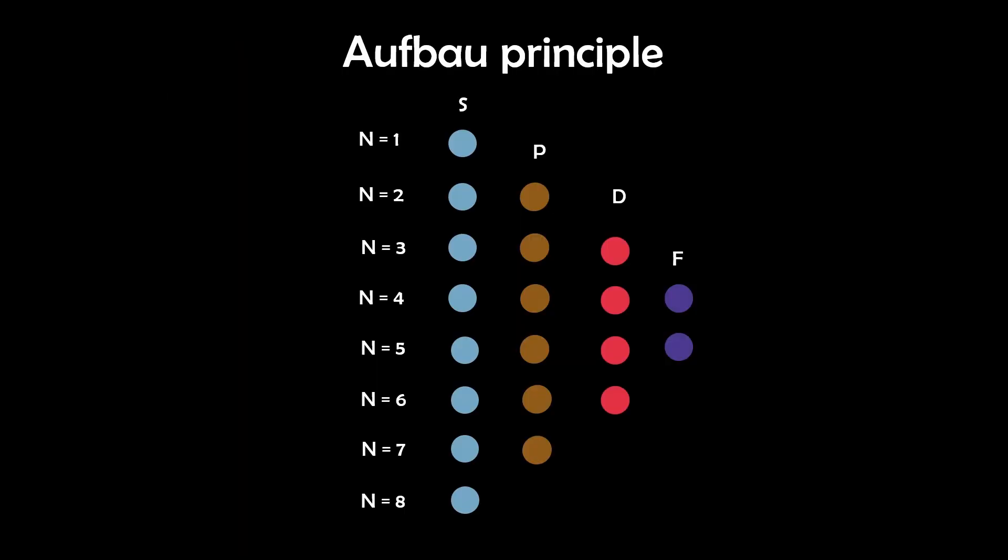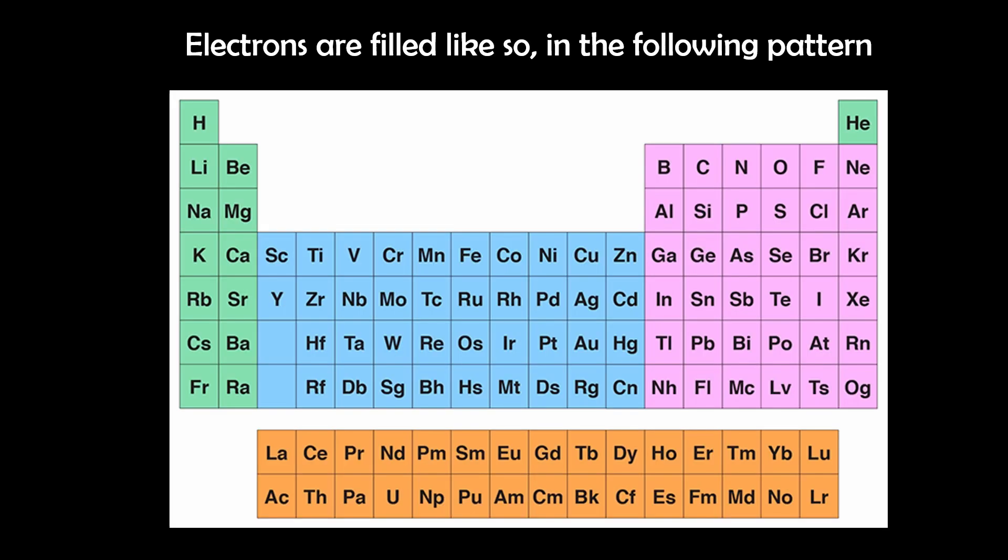The electron filling order is governed by three main rules, the first being the Aufbau principle, where electrons fill the lowest energy orbitals first, as seen in this image. And this also makes more sense when we apply it to the periodic table.